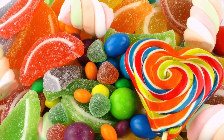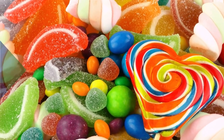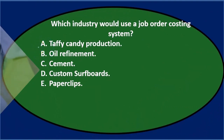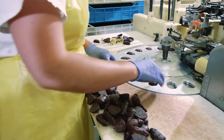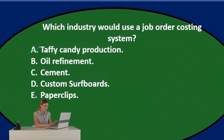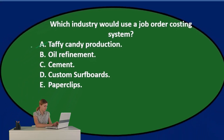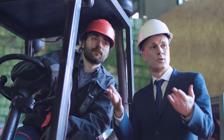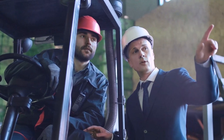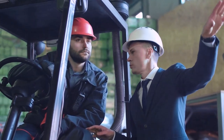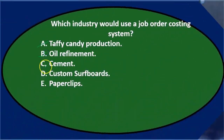It's all done by one machine — all the taffy is exactly the same, typically. That's the goal, and therefore that's probably a process cost rather than a job cost. Oil refinement is one of the most classic examples of a process cost system because the goal is to make everything standardized. We want the end product to be as standard as possible, with no differentiation.